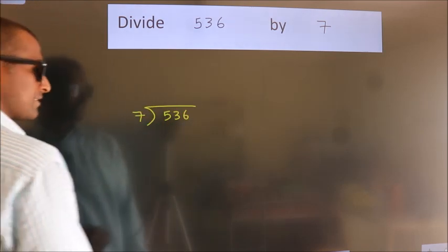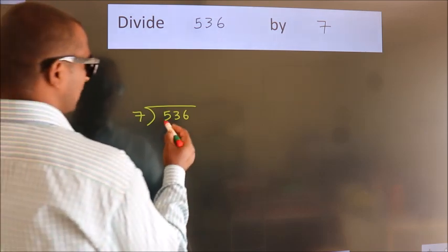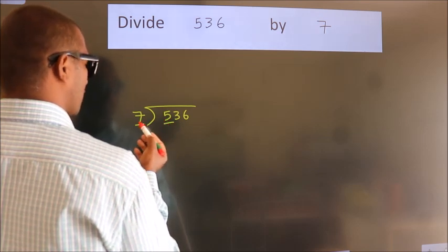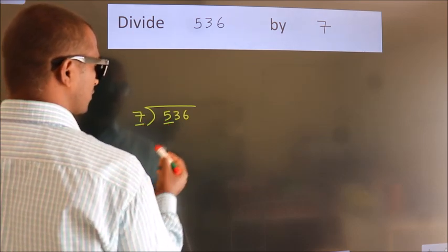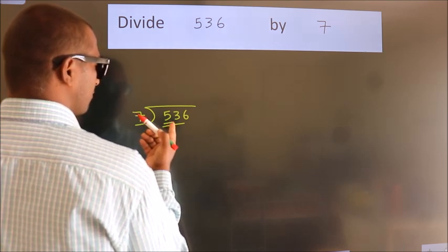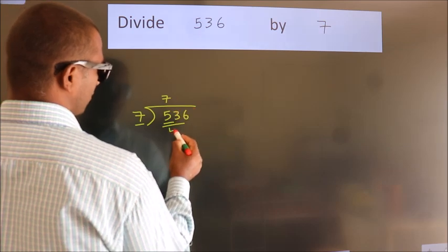This is step 1. Next, here we have 5, here 7. 5 is smaller than 7, so we should take two numbers: 53. A number close to 53 in the 7 table is 7 times 7 equals 49.